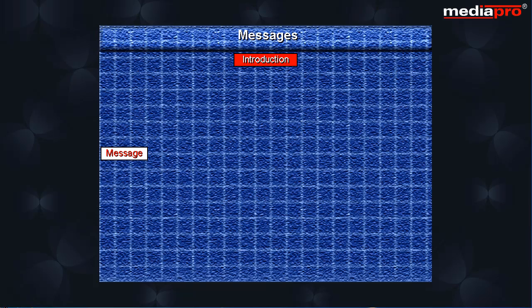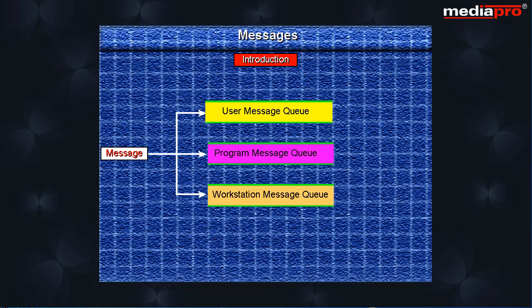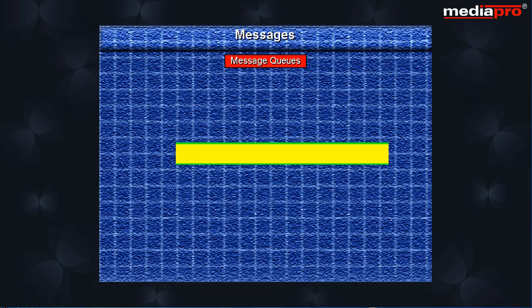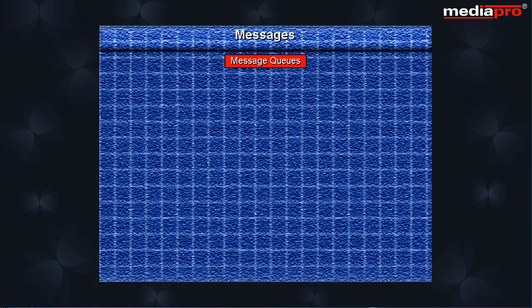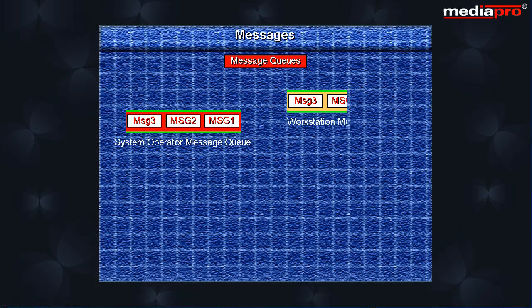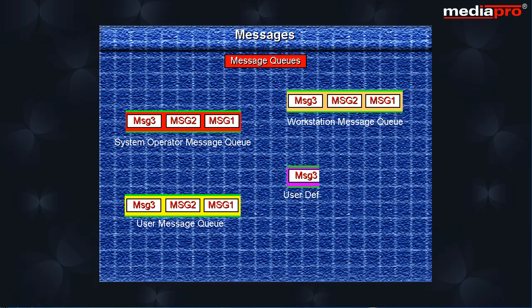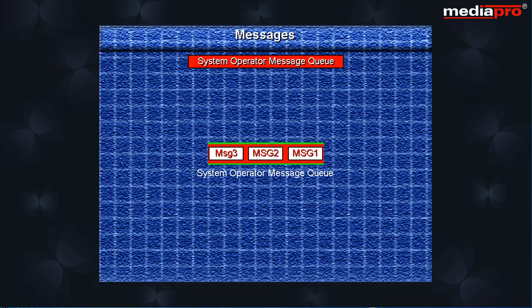Messages are not sent directly to a user or a program, but rather to a message queue that is associated with a user, program or workstation as may be the case. A message queue is an AS400 object that is used to hold messages. There are four different types of message queues.